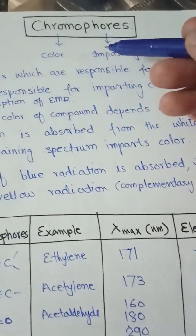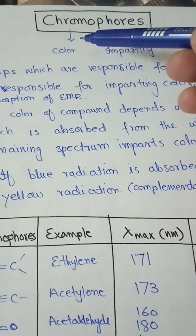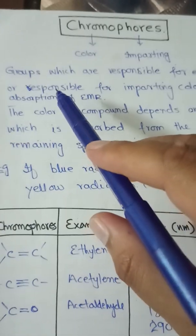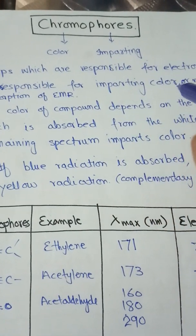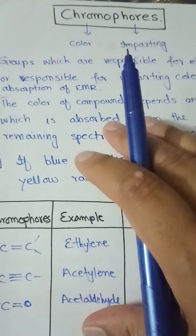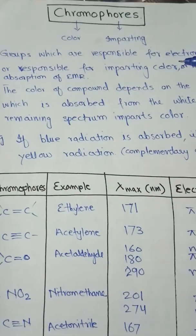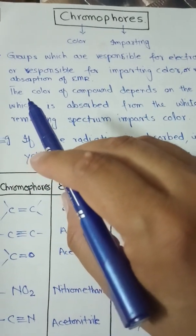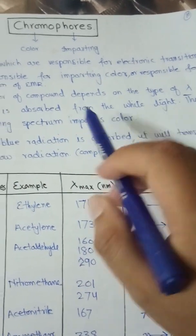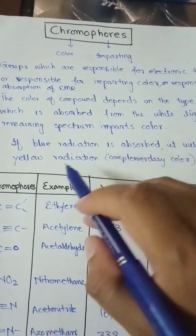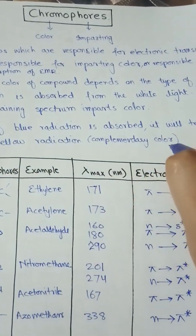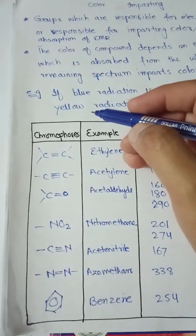First, we will study what are chromophores. Chromophore means color-imparting. These are the groups responsible for electronic transition, or we can say they are responsible for imparting color by absorbing different electromagnetic radiations. The color of the compound depends on the type of wavelength absorbed from white light; the remaining spectrum imparts color. For example, if blue radiation is absorbed, it will transmit yellow radiation, which is called the complementary color.